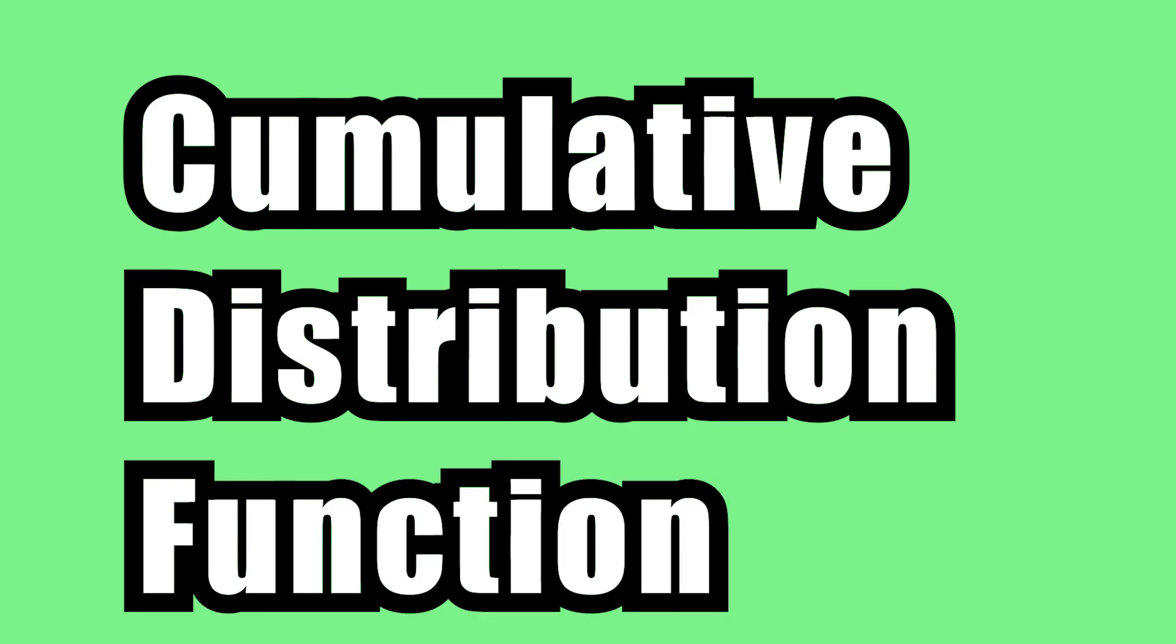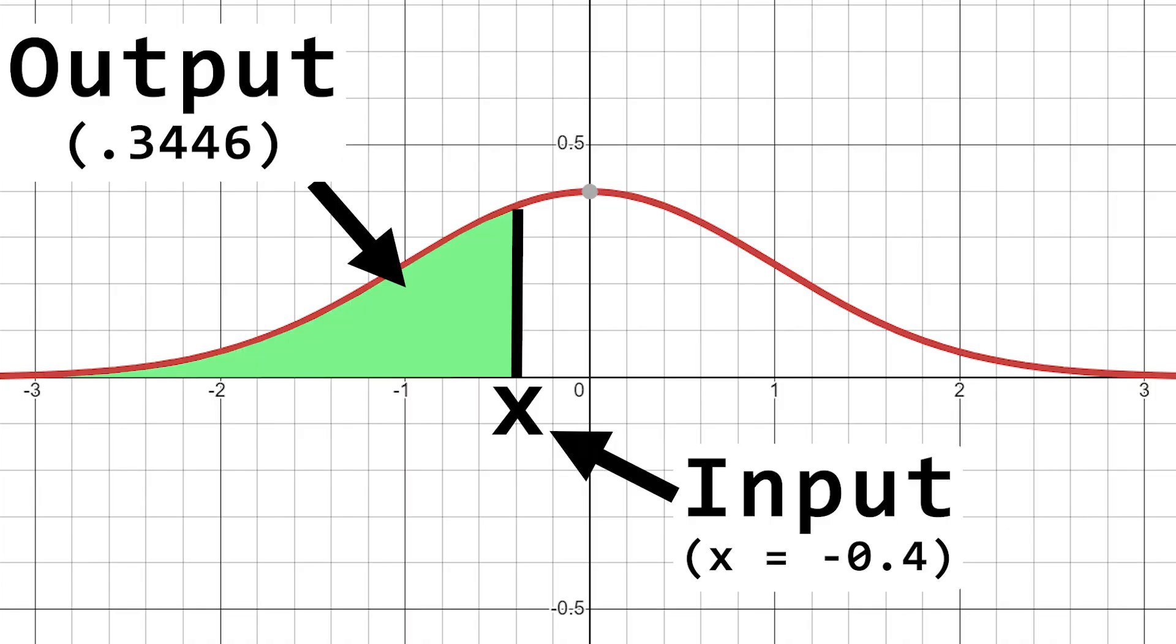So, how the heck do we approximate? Well, first we have to talk about what's called a CDF. A CDF, or cumulative distribution function, takes in a value and then outputs the area under the curve from negative infinity to the input, which is basically just the probability.